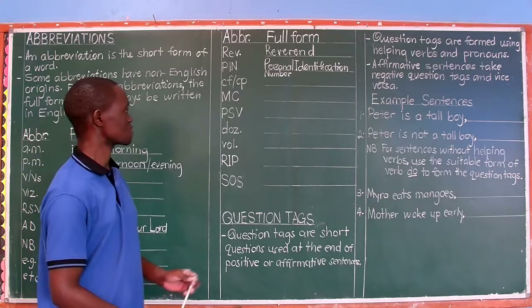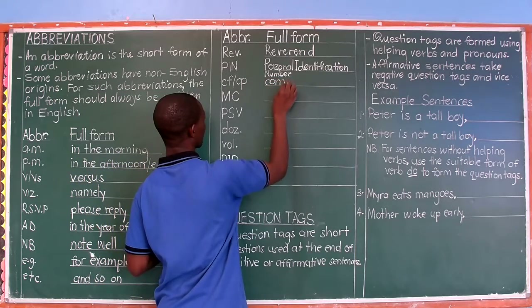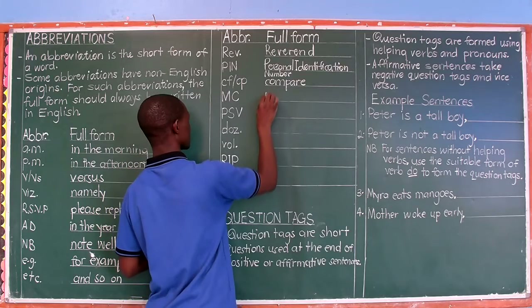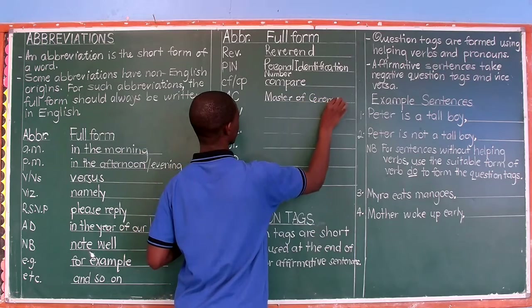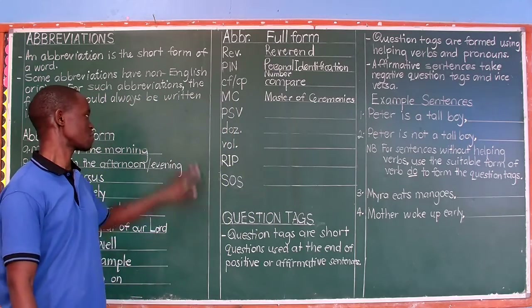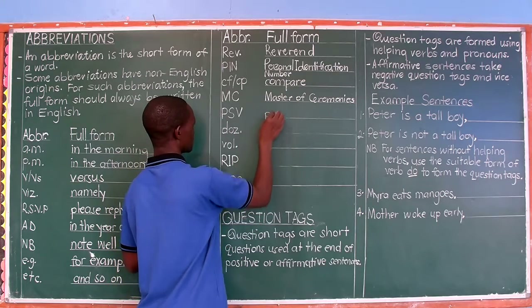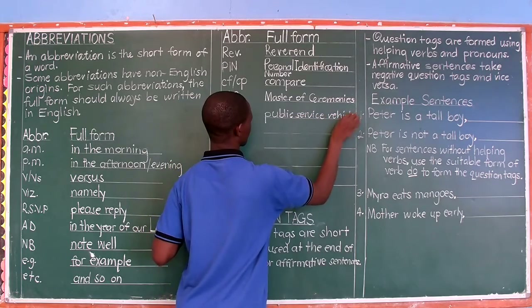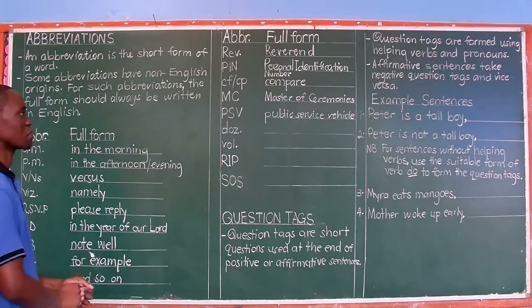Next is CF or CP — this abbreviation is used to mean 'compare'. Then MC stands for 'Master of Ceremonies'. PSV is a brand used on vehicles — it stands for 'Public Service Vehicle'. Like the taxis you use, they are known as public service vehicles because they serve the entire public — all people in general.